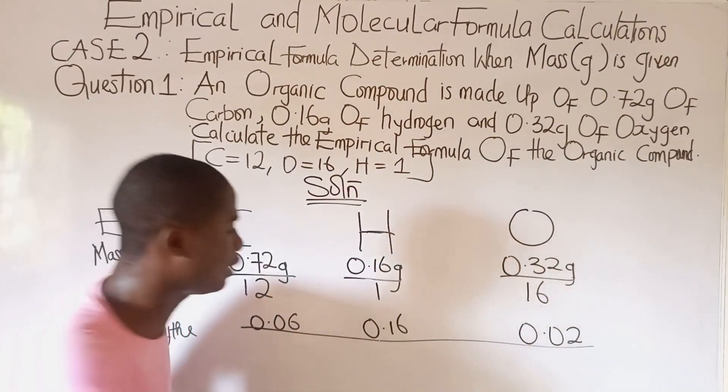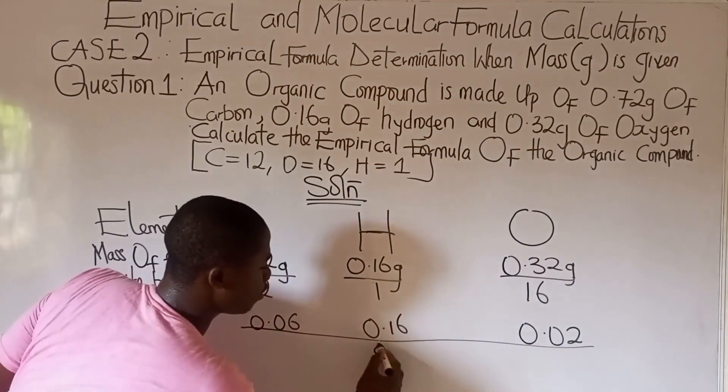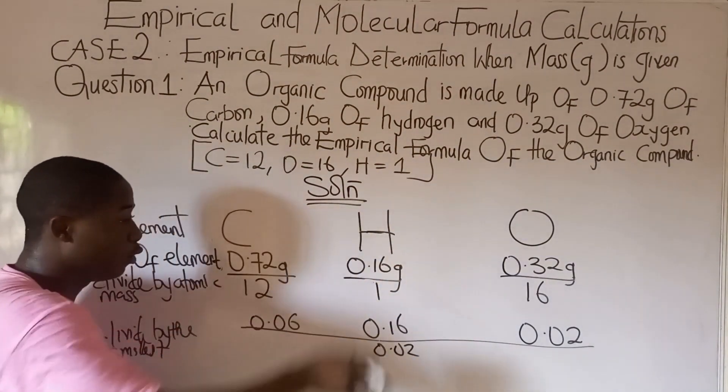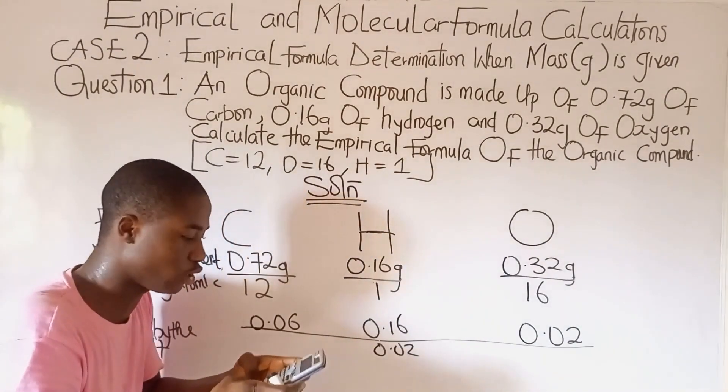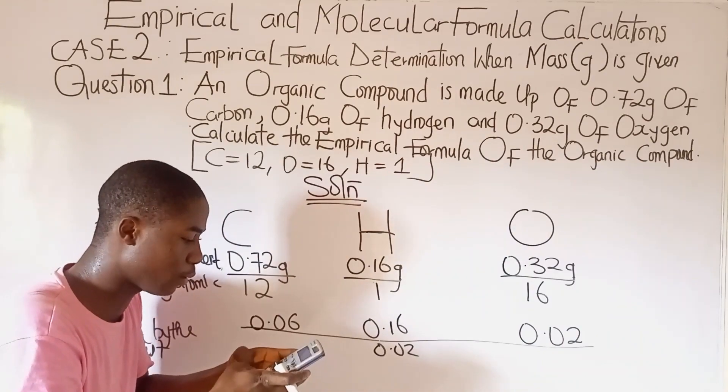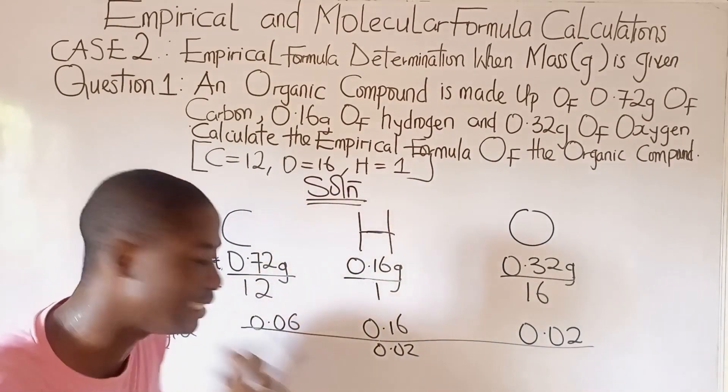Yes, it is the smallest value. So we divide through by this number, 0.02. So let's divide all through by this 0.02. 0.06 over 0.02. 0.06 divided by 0.02. That's 3.